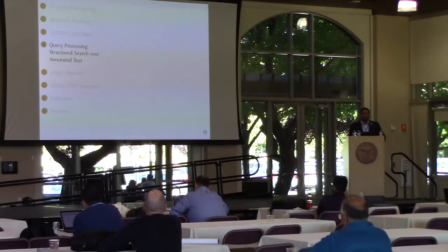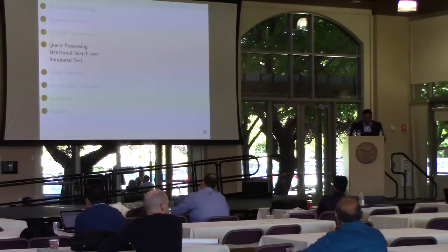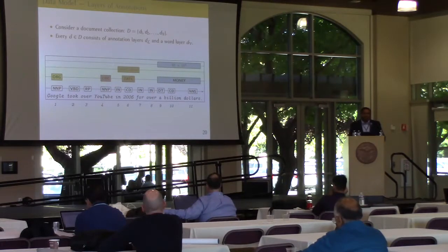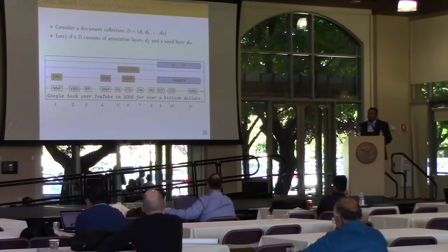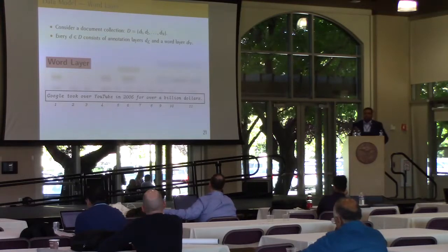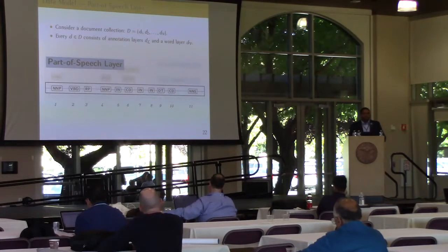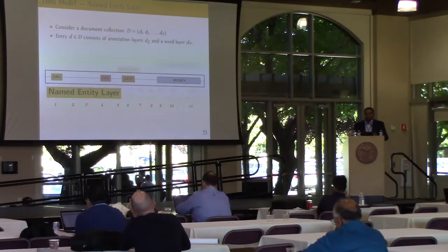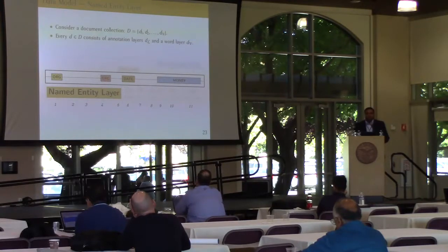Next, I'll explain query processing and how we retrieve sentences for such a complex query. To do this, I'll first explain how we model annotated documents in a collection. Consider a large document collection where each document is pre-processed with multiple annotation layers: first the word layer with positional information; then the part-of-speech layer with tags like noun phrases, cardinal values, or verbs; then the named entity layer, which classifies noun phrases into person, organization, location, money, time, date, percentages, etc.